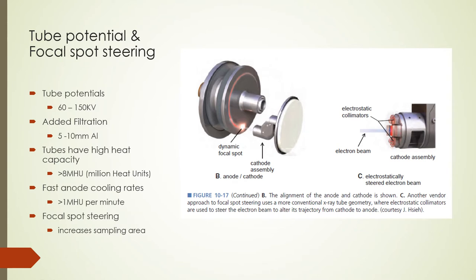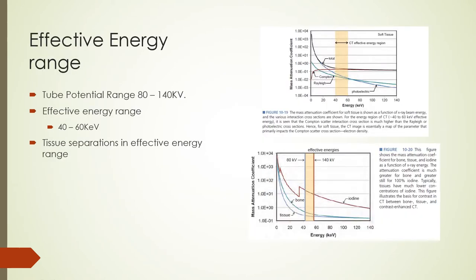Newer CT tubes have high heat capacities greater than 8 million heat units and up to 30 million heat units in some cases, with fast anode cooling rates of more than 1 million heat units per minute. In some tubes, the X-ray beam is steered to hit different portions of the anode to reconstruct more scan planes by increasing the sampling area. While CT tubes may operate in the 80 to 140 kV range, useful effective energies lie in the 40 to 60 keV range.